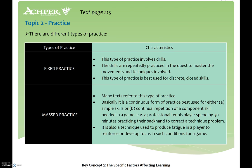Fixed practice involves drills repeatedly practiced to master movements, best used for discrete closed skills such as hitting a golf shot. Mass practice is a continuous form of practice best used for simple skills or continual repetition of a component skill. For example, a professional tennis player spending 30 minutes on their backhand to correct technique, or to develop focus under fatigue conditions — though other practice is needed to apply it in a game situation.